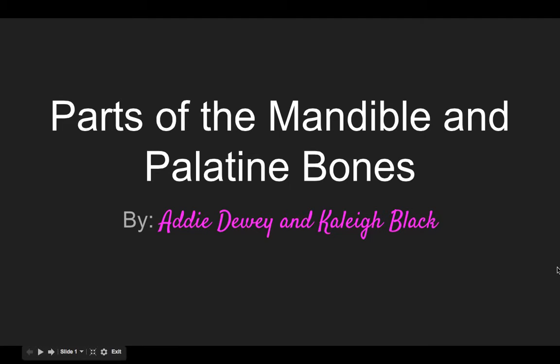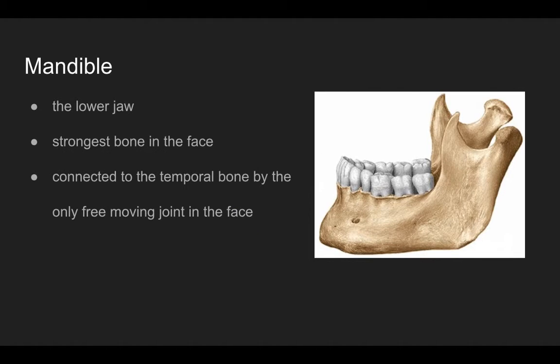These are the parts of the mandible and palatine bones, by Addie Dewey and Kaylee Black. The mandible is the lower jaw and also the strongest bone in the face. It's connected to the temporal bone by the only free-moving joint in the face.